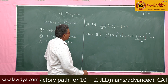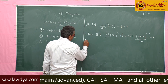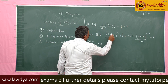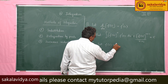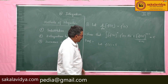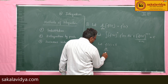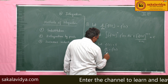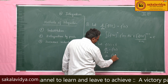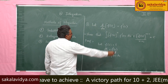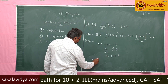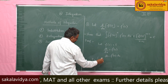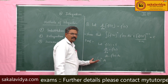Let us prove it. Let us introduce the substitution: let f(x) equal t. Differentiating with respect to x, we get dt/dx equal to f'(x), as we have already discussed. So dt equals f'(x) dx. Now this integral can be written as the integral of t^n dt, where f'(x) dx is replaced by dt. This is nothing but the x^n formula.